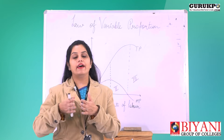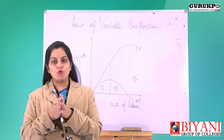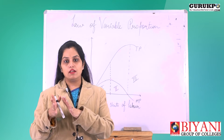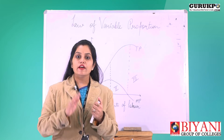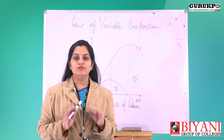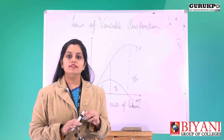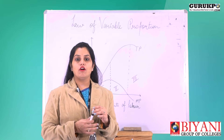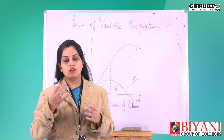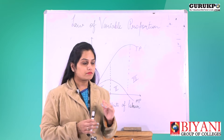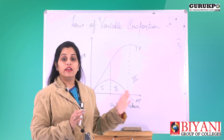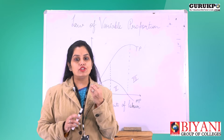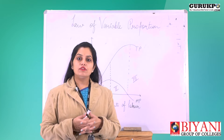Production is divided into two parts: short run and long run. Short run production functions are those in which we keep some factors fixed and the rest variable. Fixed factors do not change with the change in output, while variable factors do change with the change in output. Long run production functions are those in which we have enough time to change all the factors of production or even the type of product.